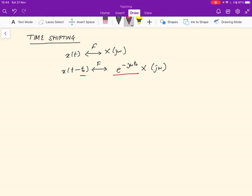And so we can, for example, see that since delta t is transformed to one, then delta of t minus t naught is going to be transformed to e to the minus j omega t naught.